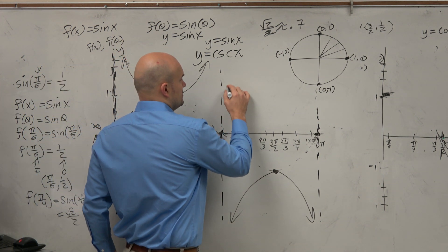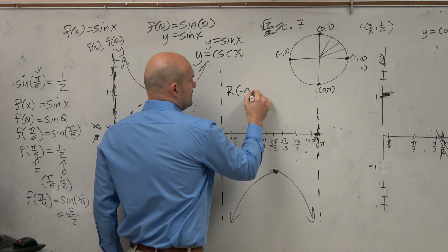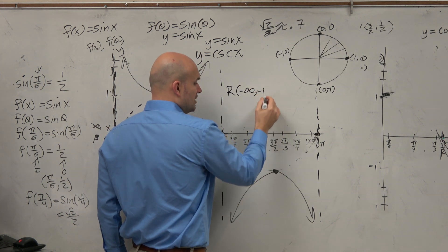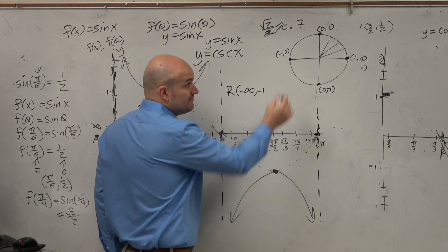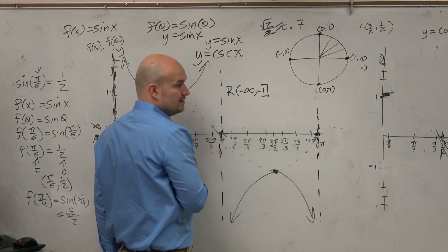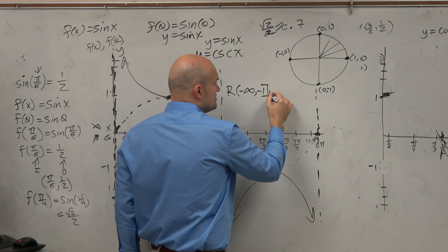So we write the range of this parent graph from negative infinity to negative 1. Negative 1 is a point though, we found that point from the unit circle, so it's included. And then we're at that nice little union symbol.